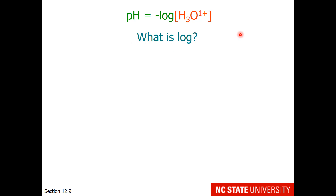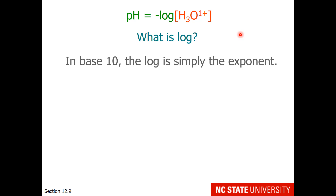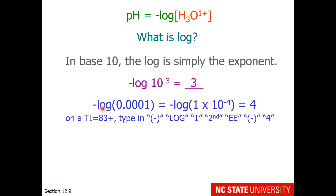What is log exactly? In base 10, the log is simply the exponent. So if I wanted to find the negative log of 10 to the minus 3, the exponent is minus 3, and changing the sign gives plus 3. If I wanted to find the negative log of 0.0001, this can be expressed as 1 times 10 to the minus 4, so the exponent is minus 4 and changing the sign gives 4.